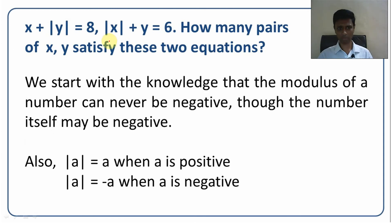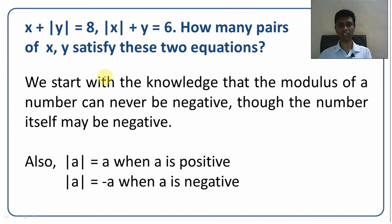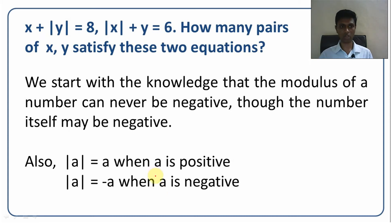Let us look at what modulus means. Modulus of a number can never be negative — the number itself can be negative, but modulus of x cannot be less than 0. Modulus of 3 is 3, and modulus of minus 3 is also 3. Defined formally: modulus of a is a when a is positive, minus a when a is negative — so modulus of minus 3 is minus of minus 3, which is plus 3. When a is 0, mod a is also 0.